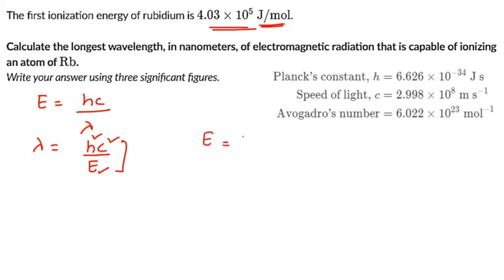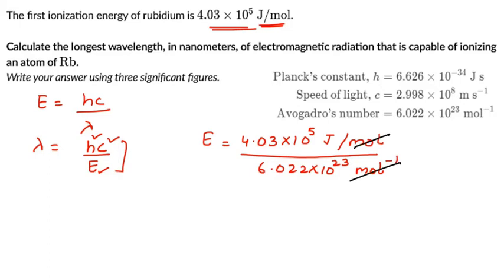The energy given is 4.03 × 10^5 joules per mole. If we divide by Avogadro's number, 6.022 × 10^23 mol^-1, the mole terms cancel out and we get the answer in joules. When you calculate this, you get 6.7 × 10^-19 joules.